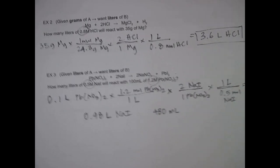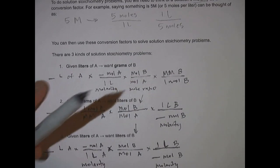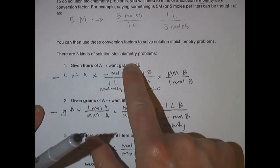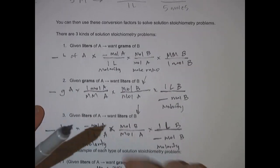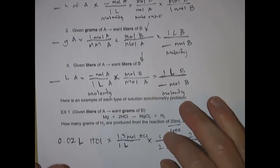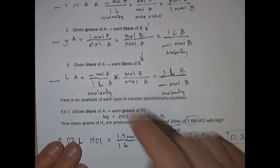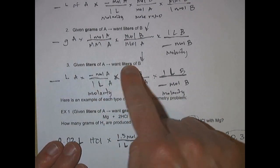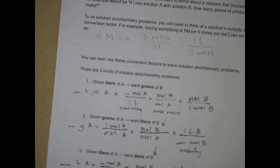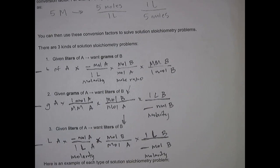So those are the three kinds of solution stoichiometry problems: liters of one thing to grams of something else, grams of one thing to liters of something else, and liters of one thing to liters of something else. Bye!